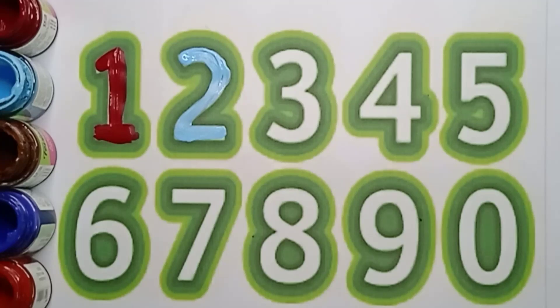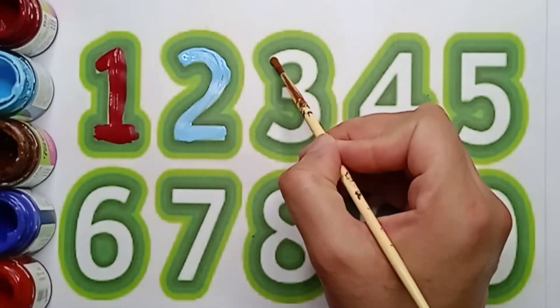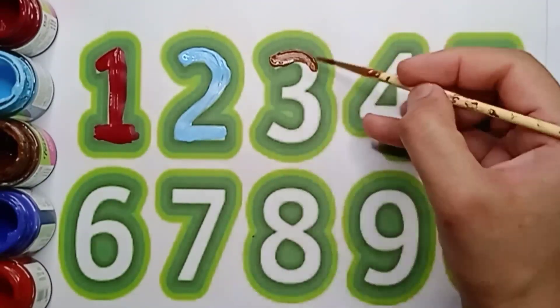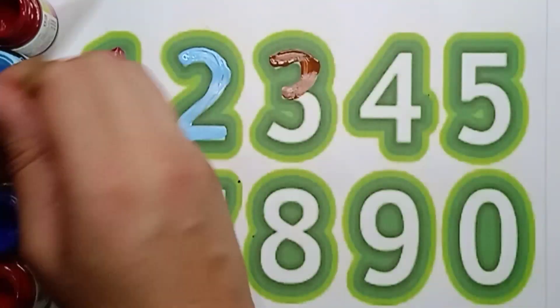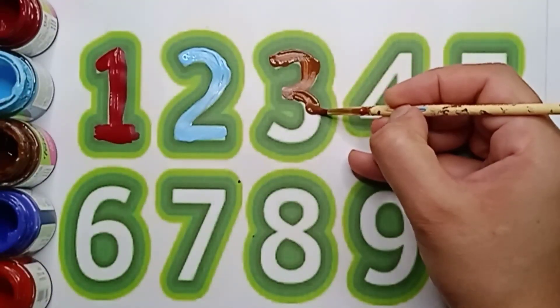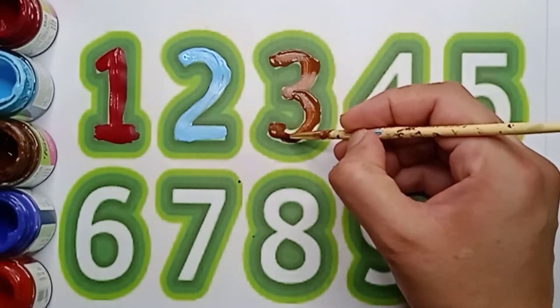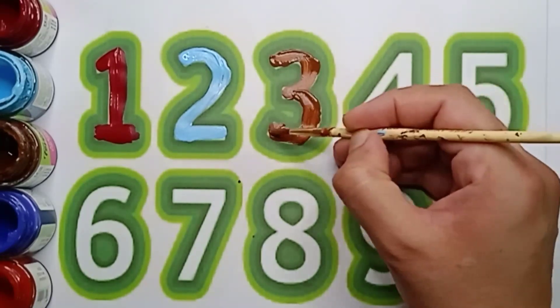Very good. Next number is three. It's brown color, three. Say everyone, brown color, three. T-H-R-E-E, three.